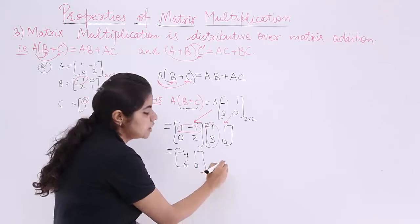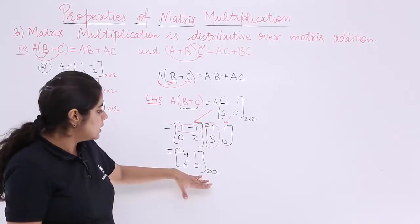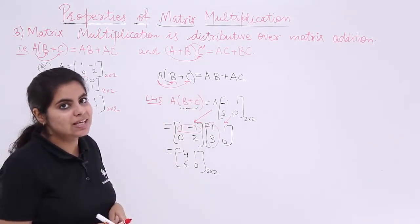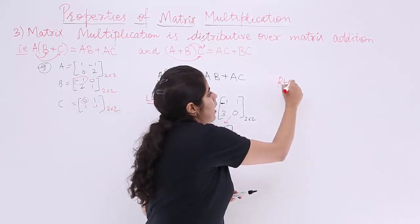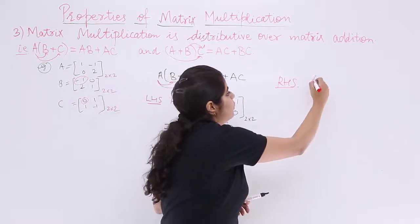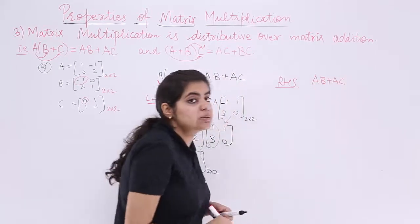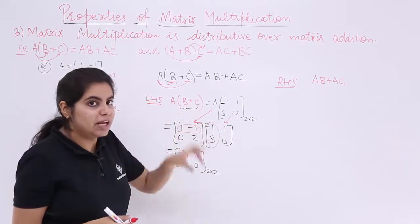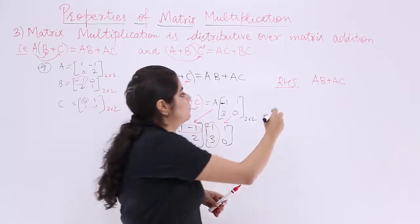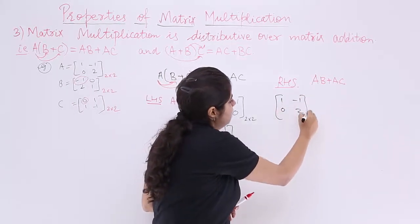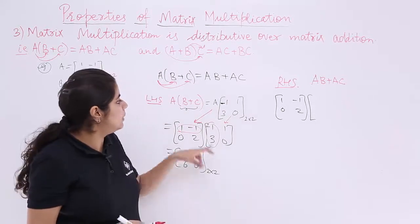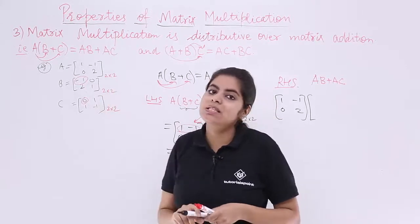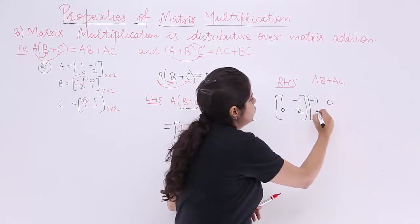This matrix [-4, 1; 6, 0] is the result of the left-hand side. Now for the right-hand side, we need AB plus AC. For AB, A is [1, -1; 0, 2] and B is [-1, 0; 2, 1].